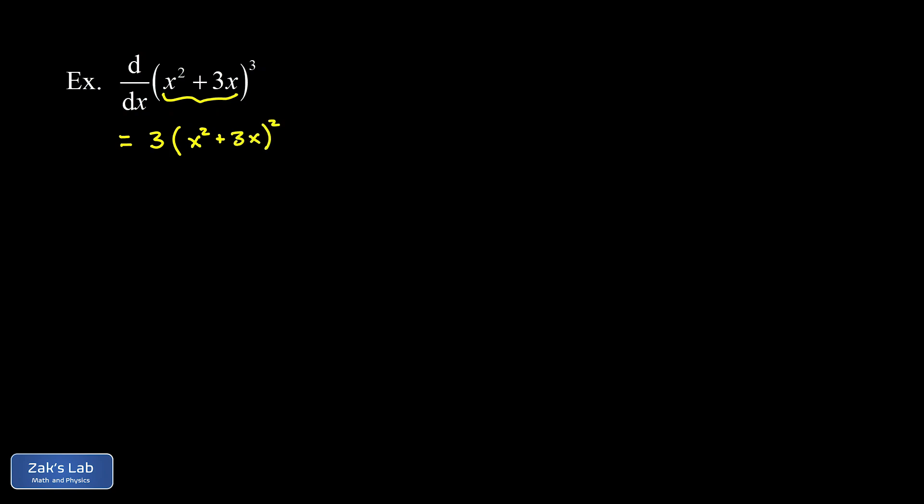Then we're going to tack on the derivative of the interior function with respect to x. So that happens to be 2x + 3. And we can clean it up a little by moving the 2x + 3 out in front with that 3. So I have 3(2x + 3)(x² + 3x)².